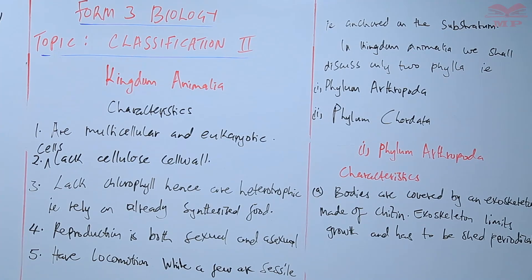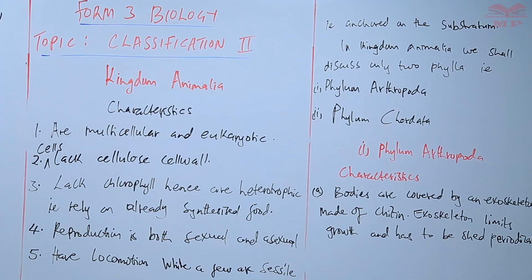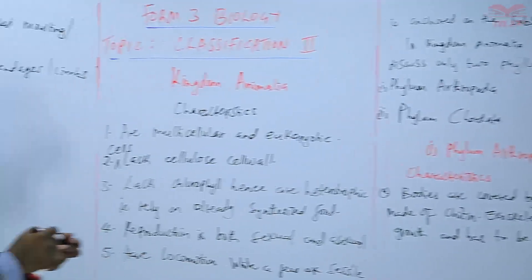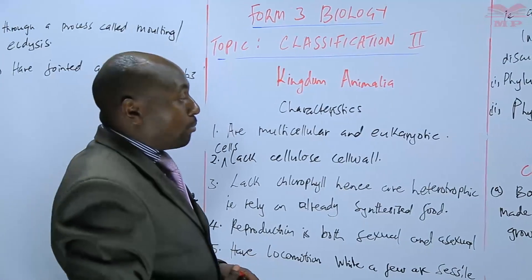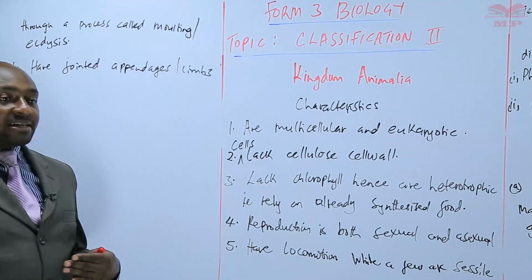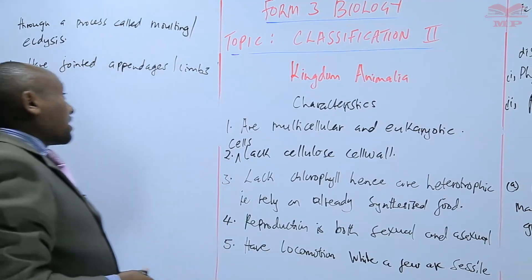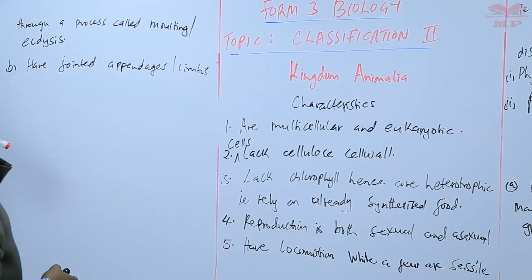Another characteristic of members of Phylum Arthropoda is that they have jointed appendages, or jointed limbs. You find that their limbs — both the forelimbs and the hind limbs — are jointed. Those are the ones we refer to as the jointed appendages.